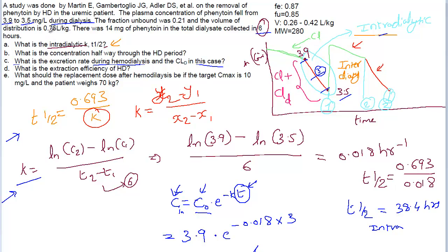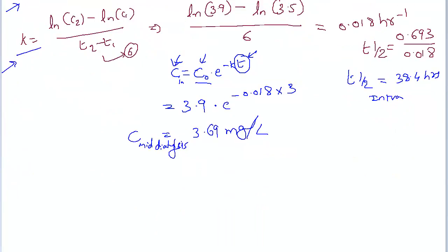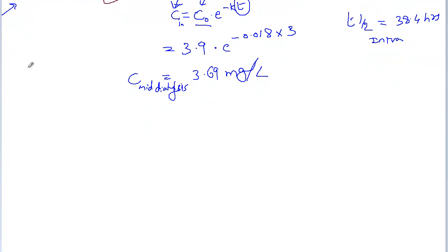Welcome back. This is a continuation of the earlier problem we were discussing. We have finished parts a and b, so now we have to work on part c: what is the excretion rate during hemodialysis, and the clearance during dialysis in this case.